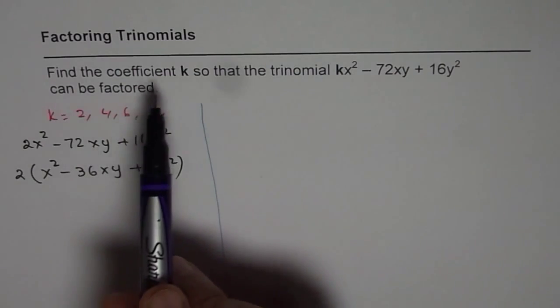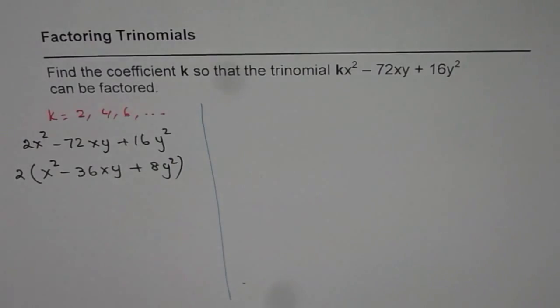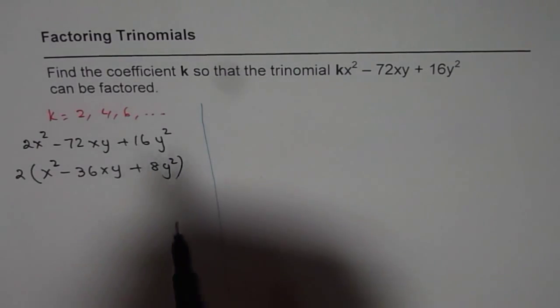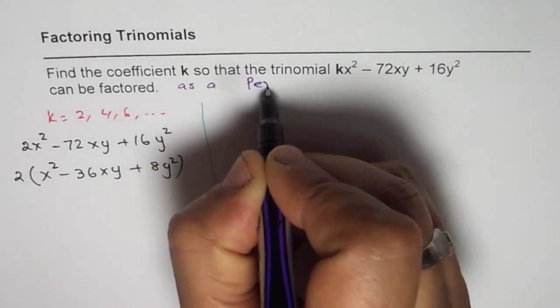this question will not be written like this. We will have find the coefficient k so that the trinomial kx² - 72xy + 16y² can be factored as a perfect square, for example.